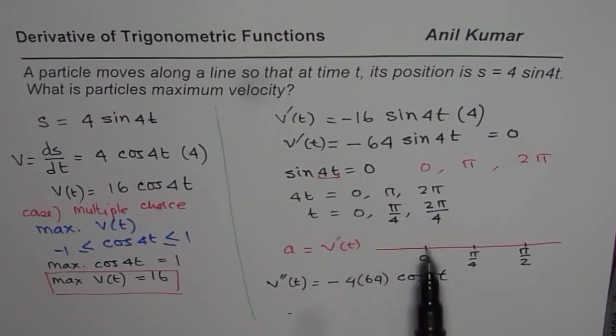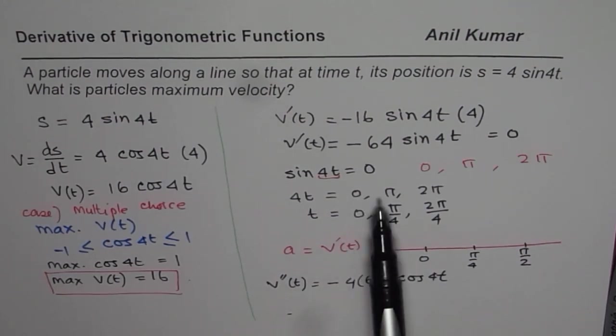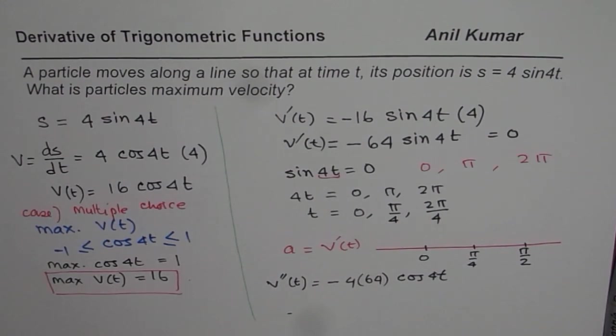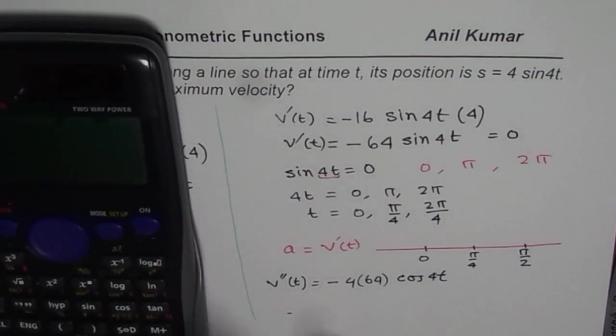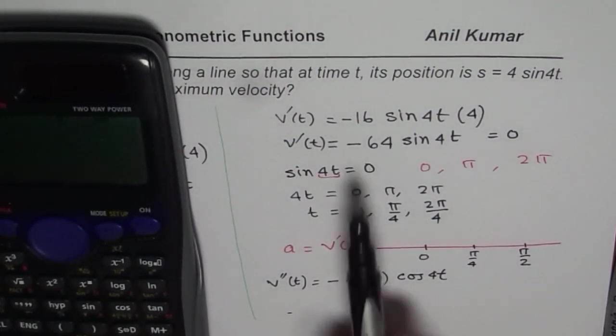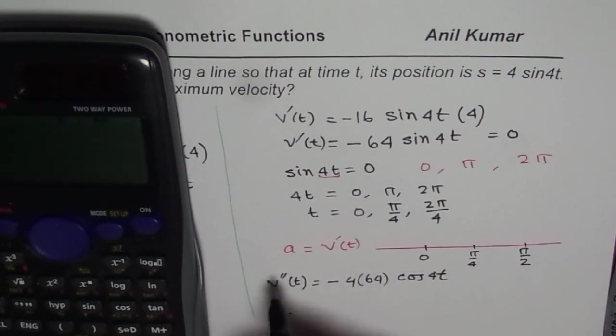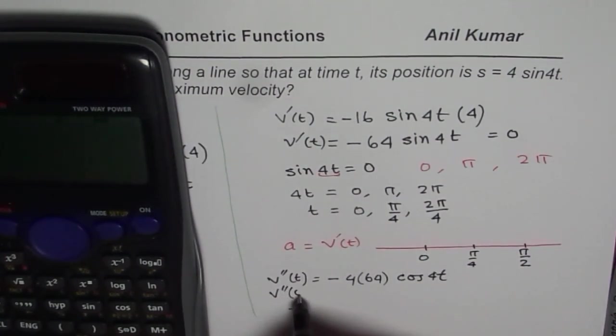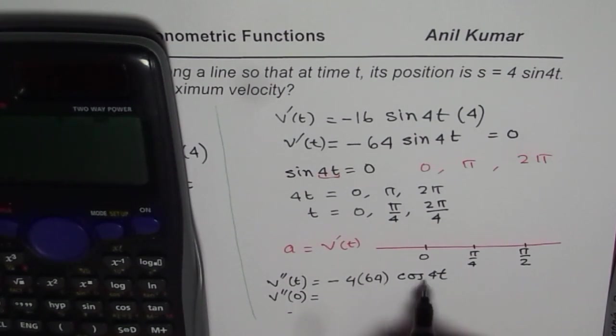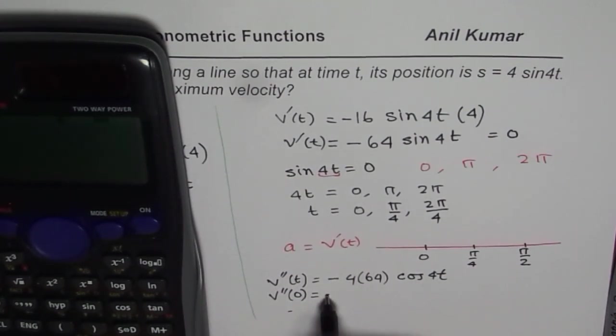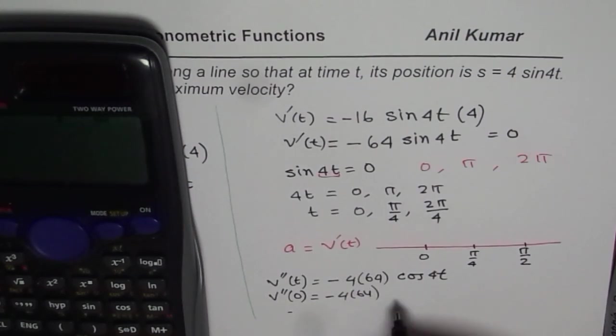Now if I test for 0, I get a negative value. So we have negative of cos 4t. We are just trying to see what is the second derivative when t is 0. We know cos 0 is 1. So that will lead to negative 4 times 64. So that is the answer, which is negative.